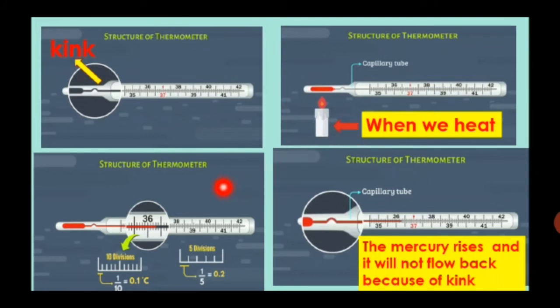To get more correct reading, there are some divisions in between two consecutive numbers in thermometer. If there are 10 divisions, each division signifies 0.1 degree Celsius. And if there are 5 divisions, each division signifies 0.2 degree Celsius.